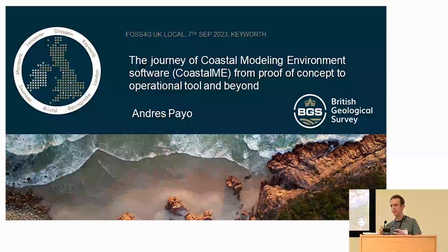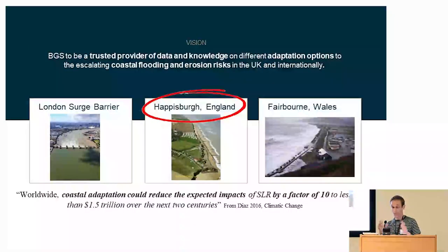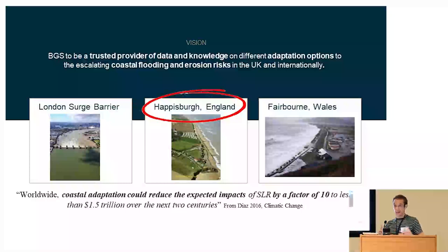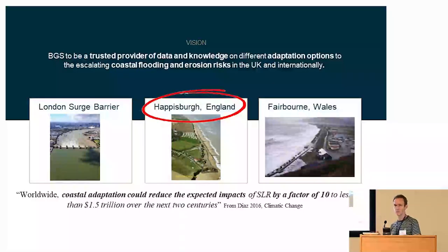It's about how we design the project, how we make it reproducible, what are the ethics behind it, and the outreach we are doing. Let's start with the problem first — why are we doing what we are doing. There is an ambition from BGS, the coastal team, and all our collaborators to be the trusted provider of data, knowledge, and software for making decisions about coastal adaptation. I'm going to bring three examples to make the case that this is happening today.